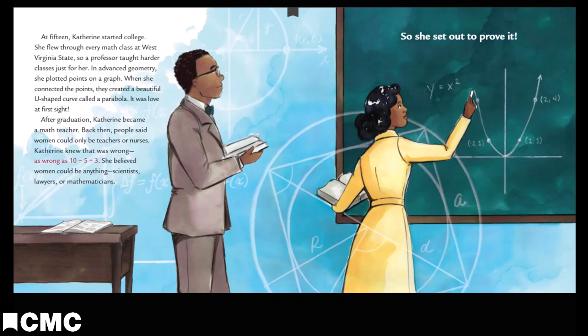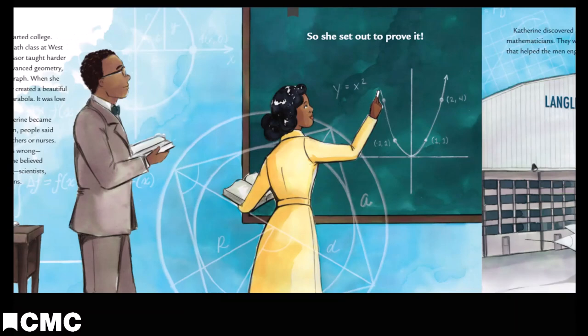After graduation, Catherine became a math teacher. Back then, people said women could only be teachers or nurses. Catherine knew this was wrong, as wrong as 10 minus 5 equals 3. She believed women could be anything—scientists, lawyers, or mathematicians. So she set out to prove it.